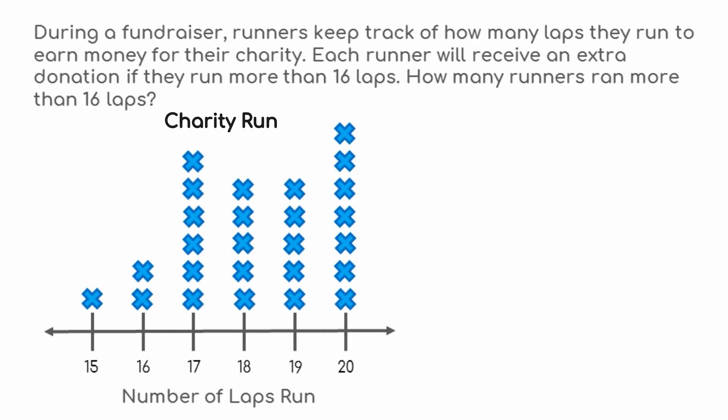During a fundraiser, runners keep track of how many laps they run to earn money for their charity. Each runner will receive an extra donation if they run more than 16 laps. How many runners ran more than 16 laps? The key words in this problem are "more than." We need to count all the X's in the columns for 17, 18, 19, and 20 laps.